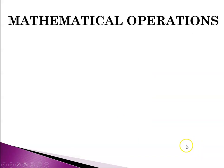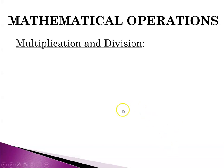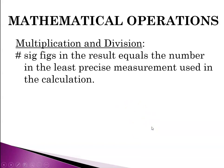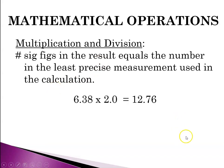So now we need to talk about mathematical operations. As it turns out, there are different rules for sig figs depending on whether you're doing multiplication and division or addition and subtraction. For multiplication and division, the number of sig figs in the result has to equal the number in the least precise measurement used in the calculation. Let's look at 6.38 times 2.0.